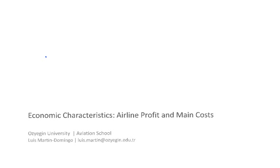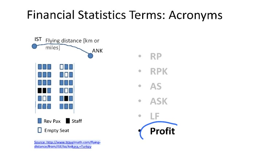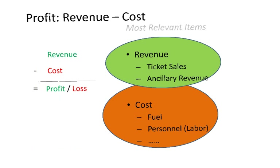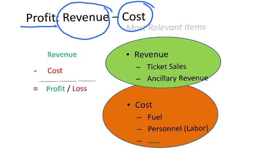During this video I will focus on airline profit, mainly looking at the most important costs for airlines. This is the last in the series we have been looking at over the past two videos about financial and statistical terms. The way we define profit for an airline is all the revenue generated minus all the costs, and basically the airline will have profit when revenue is higher than cost.